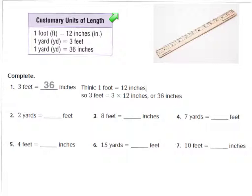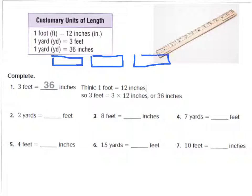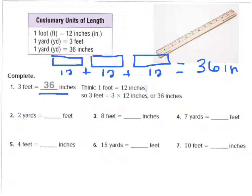Let's look at our example question. It says that 3 feet equals 36 inches. I know that 1 foot is equal to 12 inches — that's my ruler. So if I have 3 feet, I'll draw my ruler: here's 1 foot, here's 2, and here's 3. Each one equals 12 inches. So I have 12 plus 12 plus 12, which equals 36 inches. That's how they came up with this answer, using models to draw out the problem.